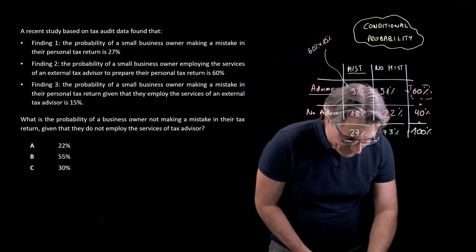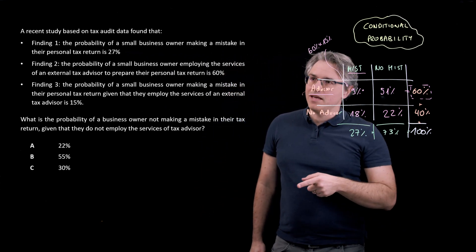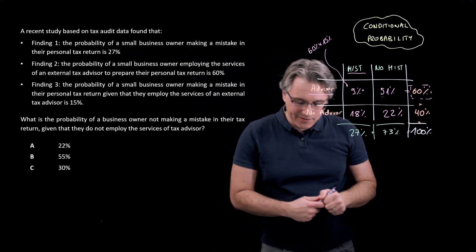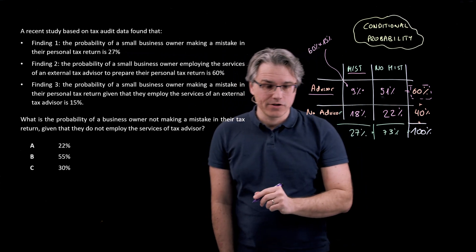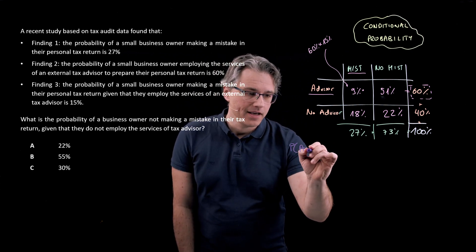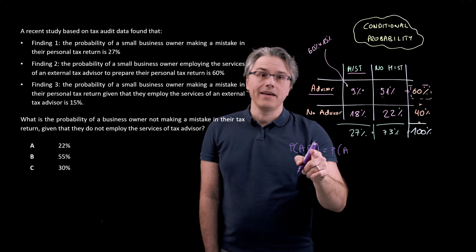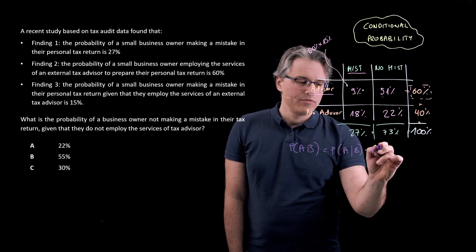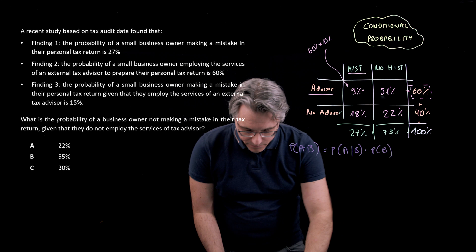Now, what this question gets us to compute is the probability of a business owner not making a mistake in their tax return, given that they do not employ the services of a tax advisor. This is a conditional probability. Previously, I wrote out the following formula for joint probability in the case of dependent events: P(A and B) = P(A given B) × P(B). That's the formula you absolutely have to remember for the purposes of the exam. Let me give meaning to A and B from the wording of the problem.